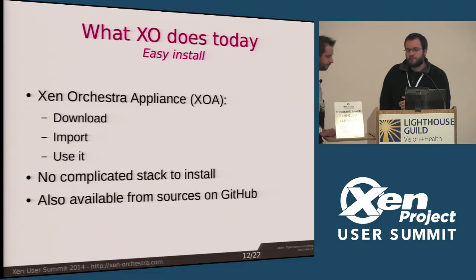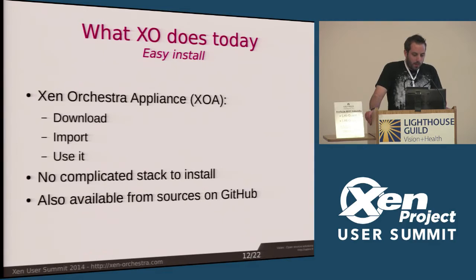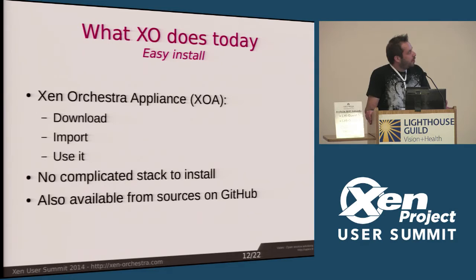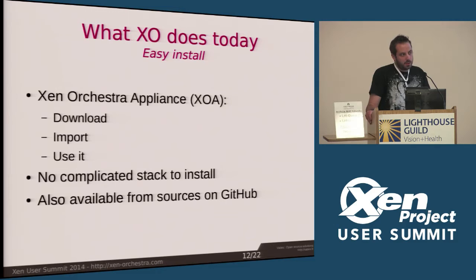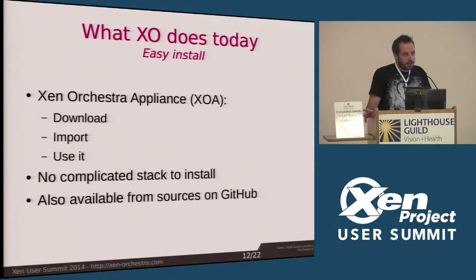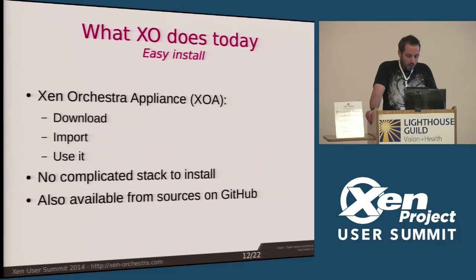So, what does Xenorchestra do today? One of our goals was an easy installation process, so we created an appliance — basically a Debian VM running with Xenorchestra started on it. In only three steps you can run Xenorchestra: download it, import it into your XenServer or Xen with XAPI hosts, and you can use it. No complicated stack to install. When you want to try the product, it's easy — you just download it. And as an open source product, you can also use it from the sources — we have repositories on GitHub.